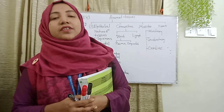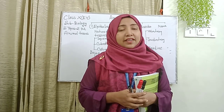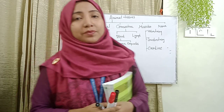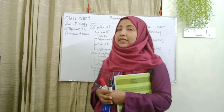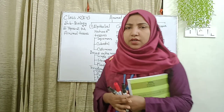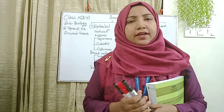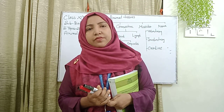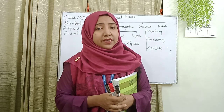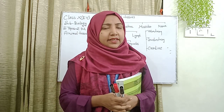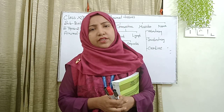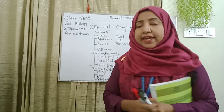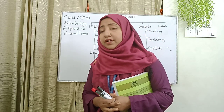Hello dear students, hope everyone is okay and fine. In the previous class we explained about plant tissue, and today I will explain about animal tissue. Our lesson is 2.3.2. You may recall that a cell is the structural and functional unit of any organism. On the basis of functions and structures, different organisms show different types of tissues. Today we will cover animal tissues, and there are four types of animal tissues.